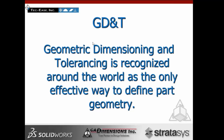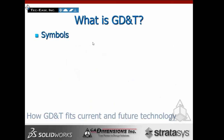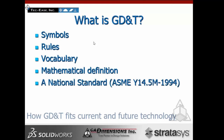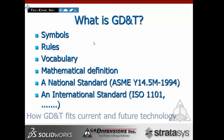Geometric dimensioning and tolerancing is recognized around the world as the only effective way to define part geometry. GD&T consists of symbols, rules, vocabulary, and mathematical definitions — yes, there's math behind the symbology. It's a national standard: ASME Y14.5M-1994, and it's also an international standard, ISO 1101. ISO puts out a series of standards which are not quite equivalent to Y14.5 because they don't mean exactly the same thing, but they do utilize the 14 symbols.